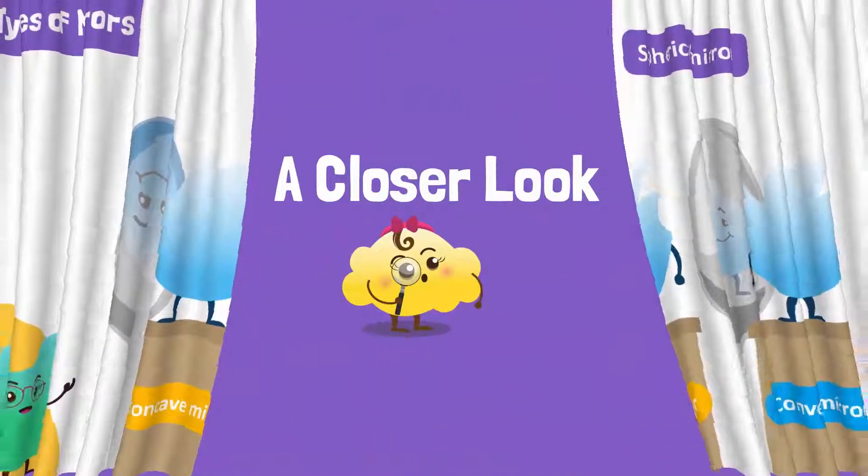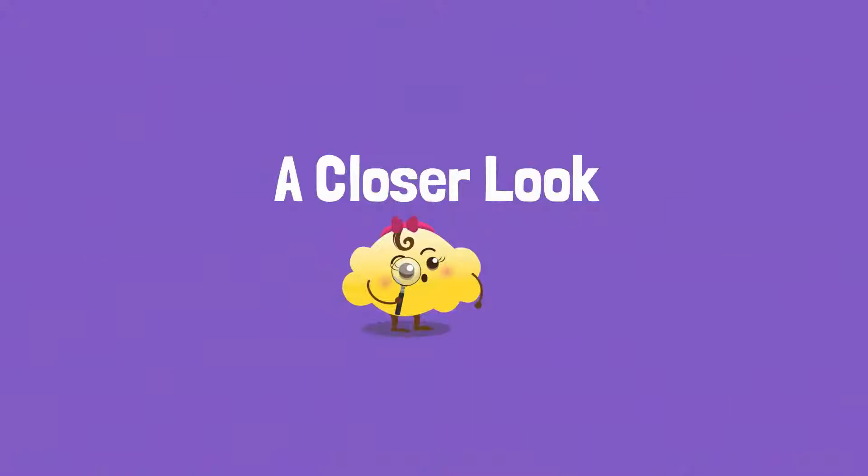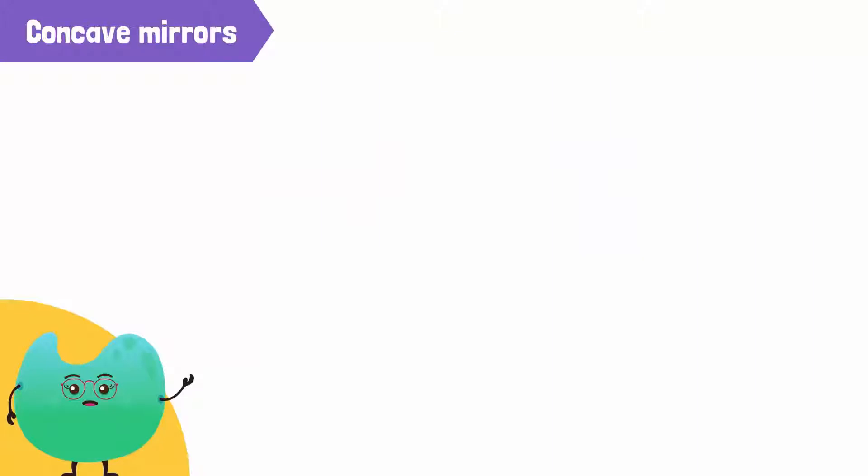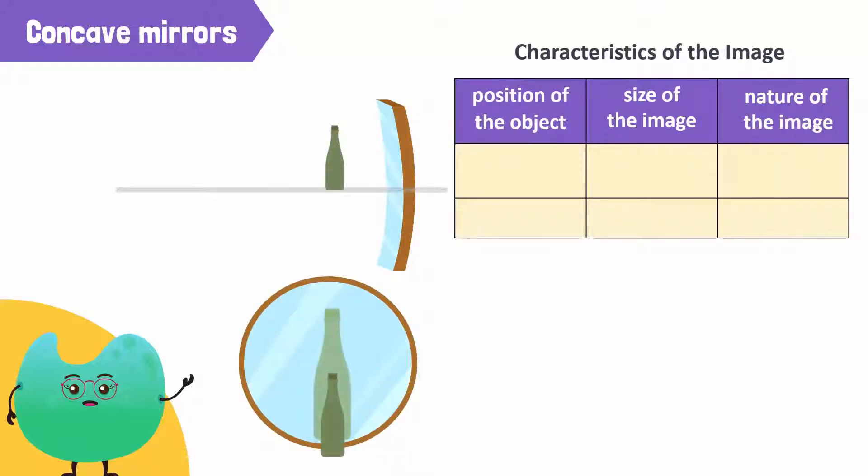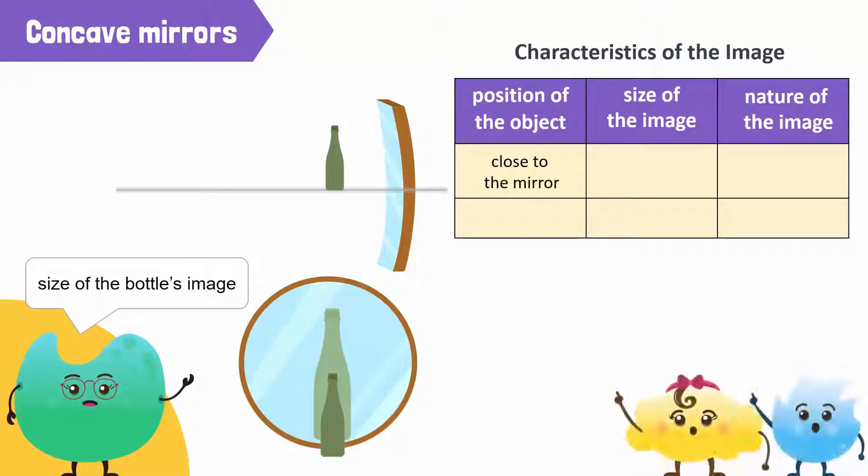Let's take a closer look at the characteristics of images formed by concave mirrors. We will look at a concave mirror from the side and from the front. Let's look at the image of a bottle in this concave mirror. First, we place the bottle close to the mirror. How big is the bottle's image? The reflection of the bottle in the mirror appears bigger than the bottle itself.